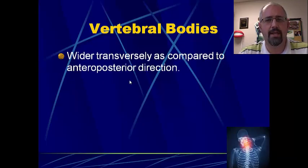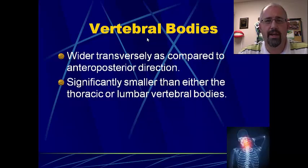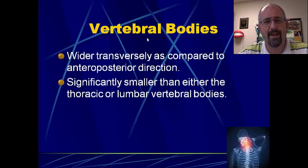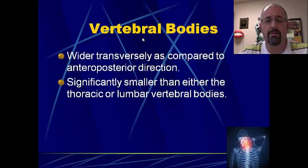Vertebral bodies are a little wider transversely as compared to the anterior-posterior direction — a little wider across than they are front to back — and they are much smaller than either the thoracic or the lumbar. If you think about that logically, if you had lumbar vertebrae up in your neck, there wouldn't be a whole lot of motion. You'd be very stable but you wouldn't get a lot of movement coming out of the neck.